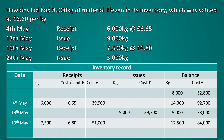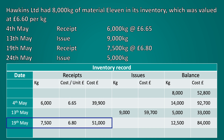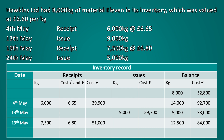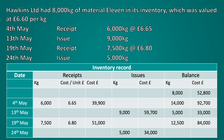The last transaction to record is the issue on the 24th of May of 5,000 kilograms. Remember, this will be valued at the newest purchase price of remaining inventory, so we take it from the receipt on the 19th of May. The value of this issue is calculated as 5,000 kilograms × £6.80. The final balance is the previous balance as at the 19th of May less the issue on the 24th of May: 12,500 kilograms less 5,000 kilograms gives a new balance of 7,500 kilograms, valued at £50,000 — taking the previous £84,000 balance and deducting the issue of £34,000.